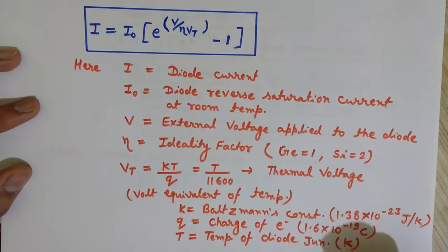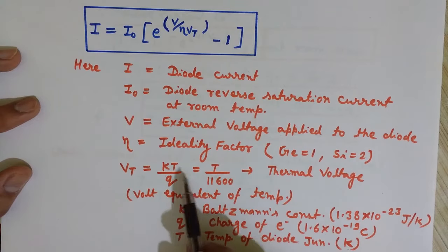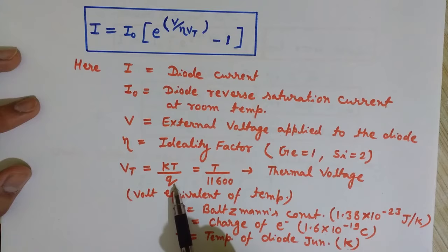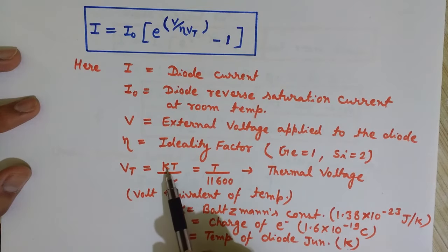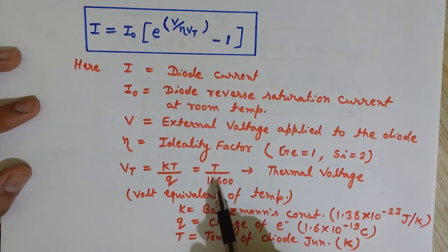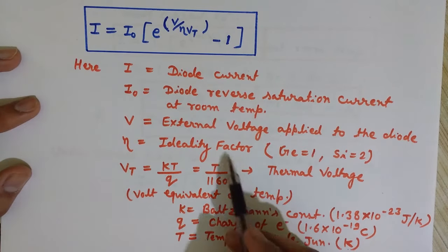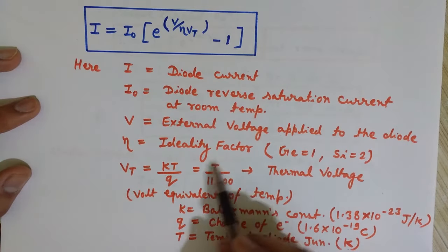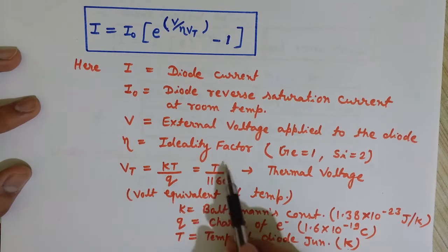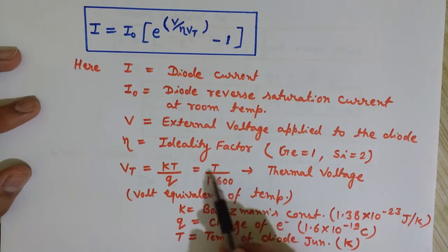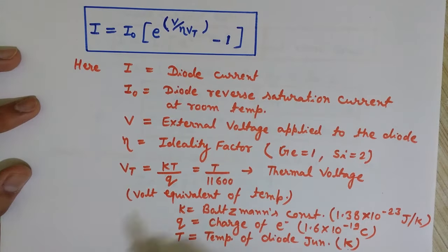If you substitute Q = 1.6 × 10⁻¹⁹ coulombs and K = 1.38 × 10⁻²³ joules per kelvin, you get VT = T divided by 11600. So you can directly use this simplified form of VT — you only need to place the value of temperature.